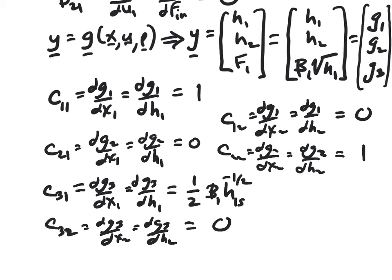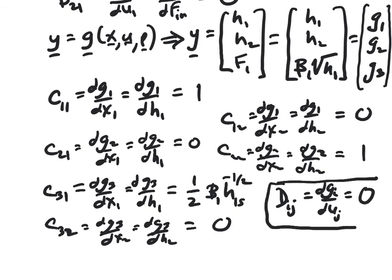For the D matrix, all elements are equal to zero, because D contains the partial derivatives of each output equation g with respect to the input. In this case we only have one input, the volumetric flow rate Fn, and it does not appear in any of the output equations. Since we have three outputs and one input, D is a three-by-one matrix of zeros.